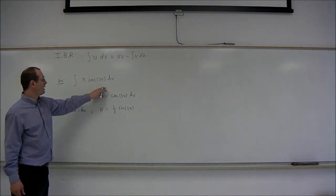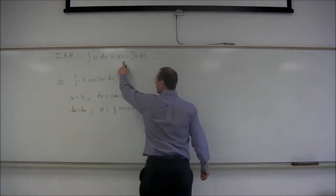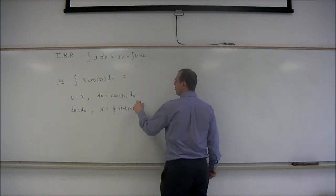So using the formula, this integral becomes uv is x times one-third sine of 3x. That's one-third x sine of 3x.